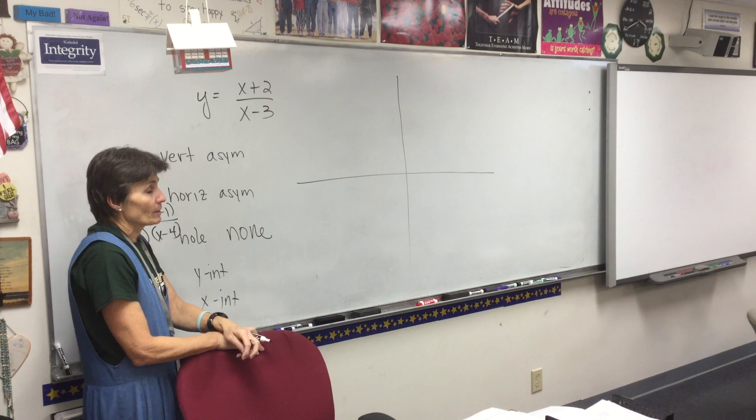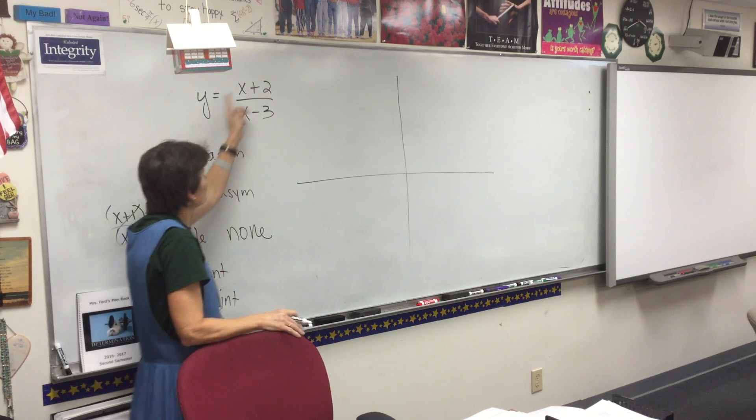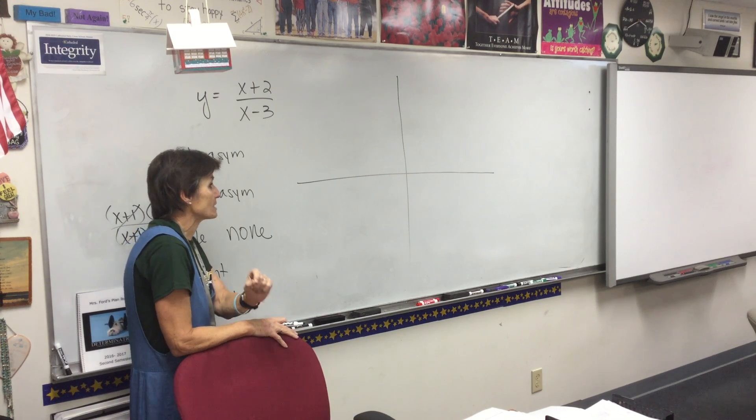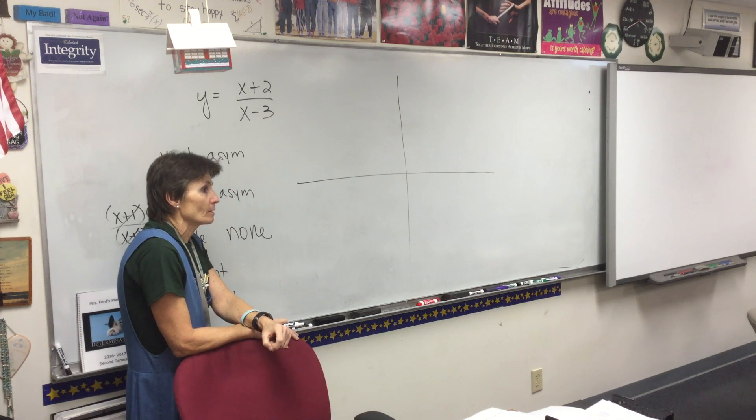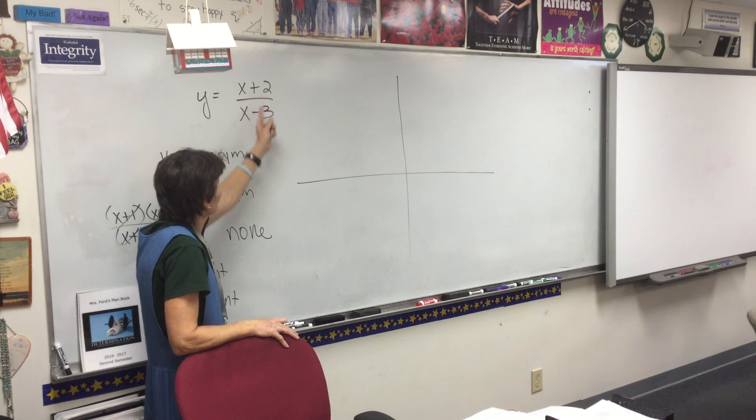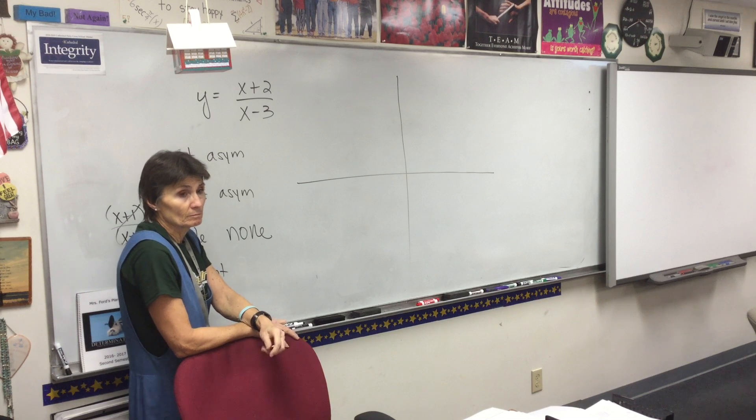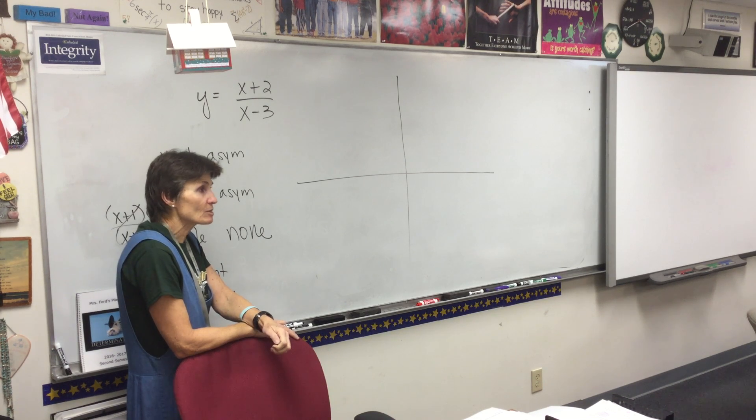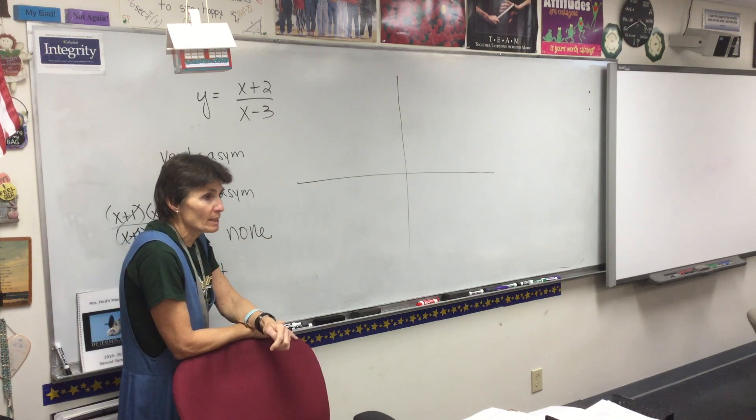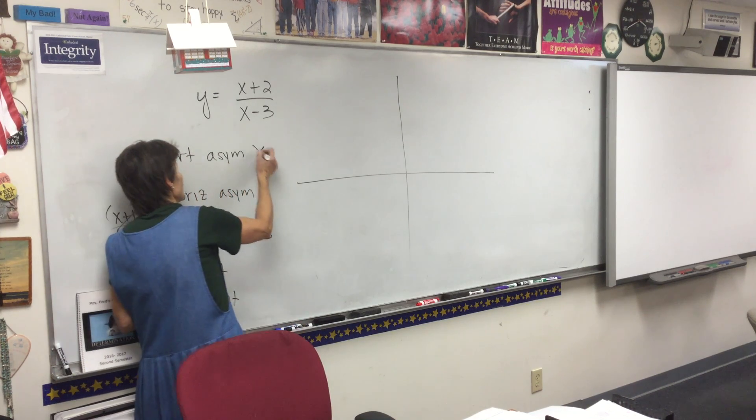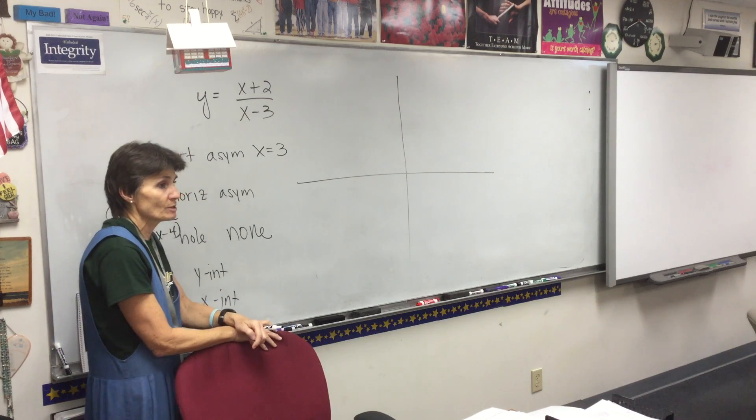Vertical asymptotes are cannot-be's. When you look at this equation, x can be anything in the whole wide world except... no, x can be 2. There's nothing wrong with 2. 2 would be fine. I could put 2 in, and I would get 4 over negative 1. That would be good. What can x absolutely not be? Oh my goodness, 3. What happens if you let x be 3? You get a zero in the denominator.